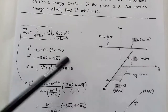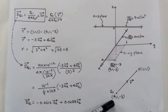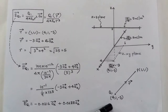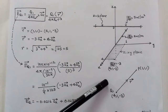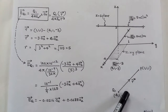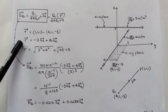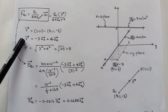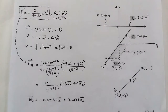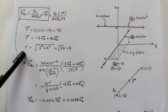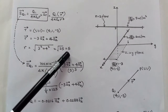The unit vector r can be written as the vector divided by its magnitude, so the formula becomes Q1 times vector r upon 4πε₀r³. The r vector is from Q1 to point P — final point minus initial point — that is (1,1,1) minus (4,1,-3). The y coordinate becomes 0, giving us minus 3 x̂ plus 4 ẑ.